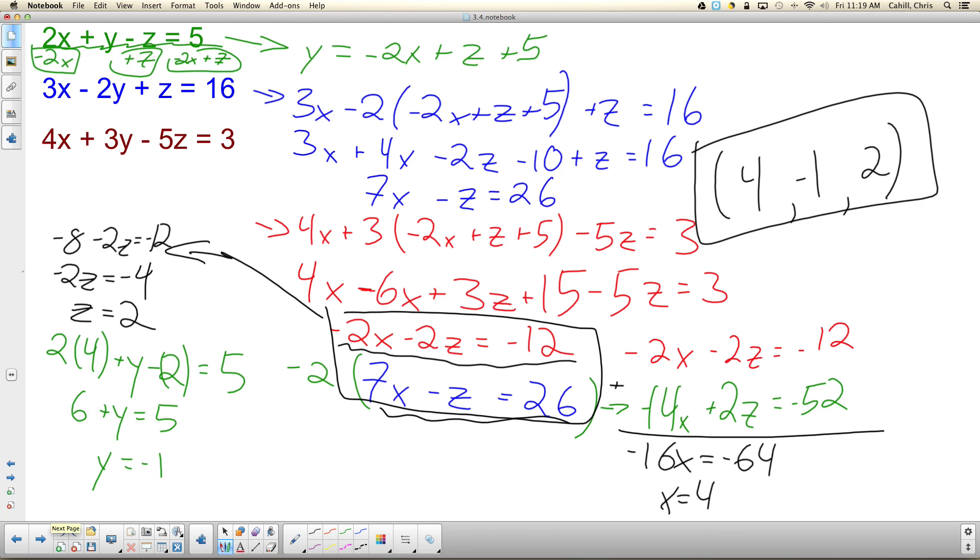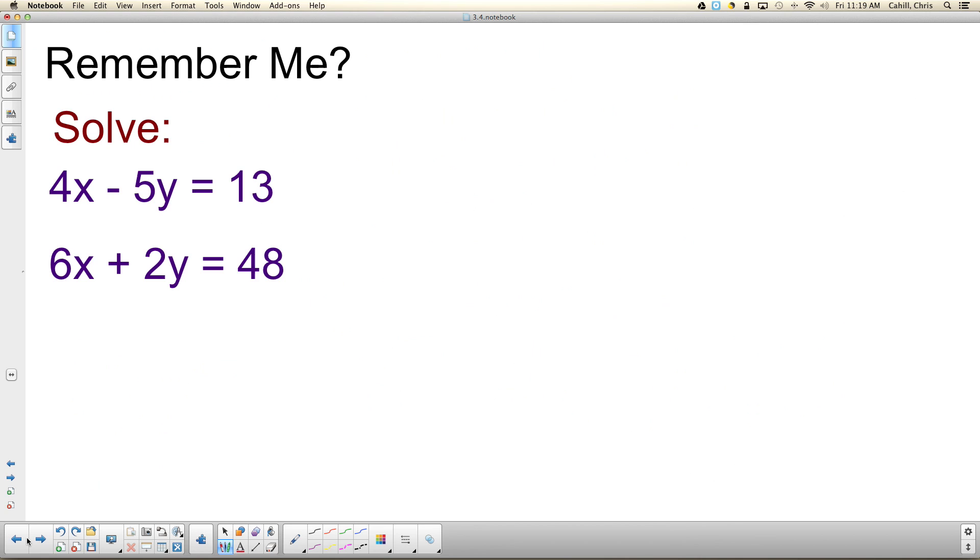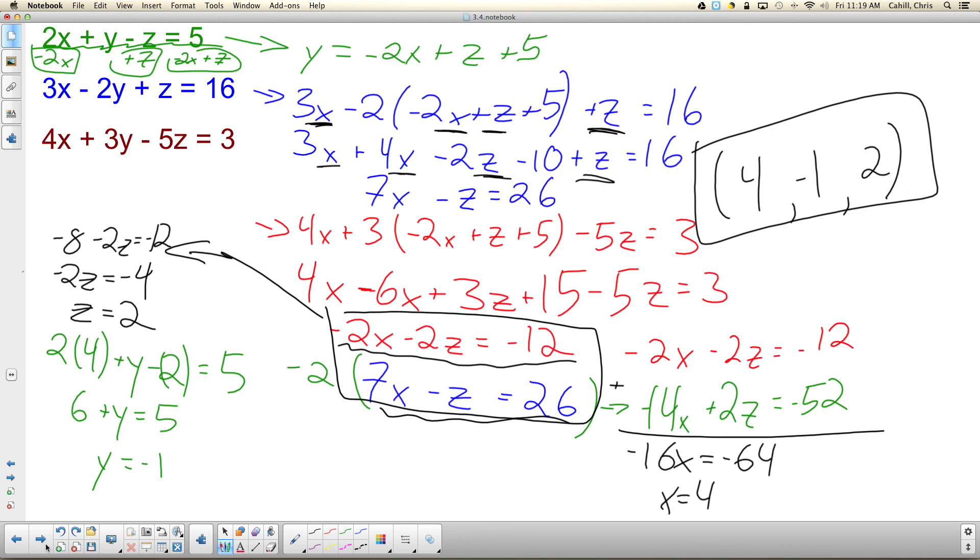Really, all we did that was different was we had that extra variable. Because once we substituted that third variable in, how many variables do we see? Two. X's and Z's. And then it's just a matter of combining them. So after solving for one, suddenly there's two variables. That's just like we looked at before. Down in that black box, that's where the problem started before. So you guys are absolutely capable of doing this. Don't tell yourselves otherwise.